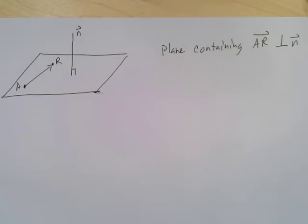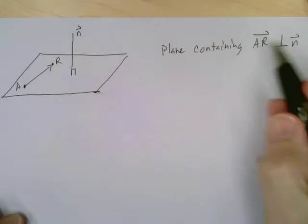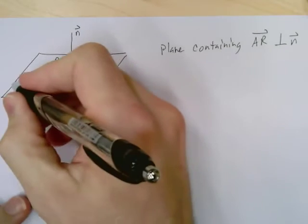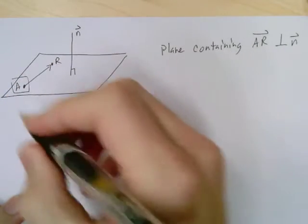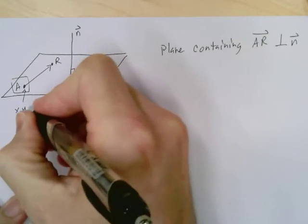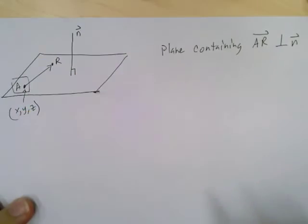All right, let me show you something else a little bit cool. Let's consider a plane. This plane contains the vector AR. This AR is a very special vector because AR starts at this point A. A is a point we know, we have an XYZ for that point. We know its location.